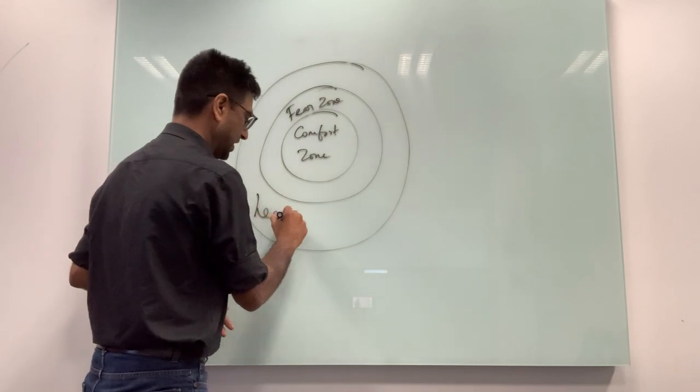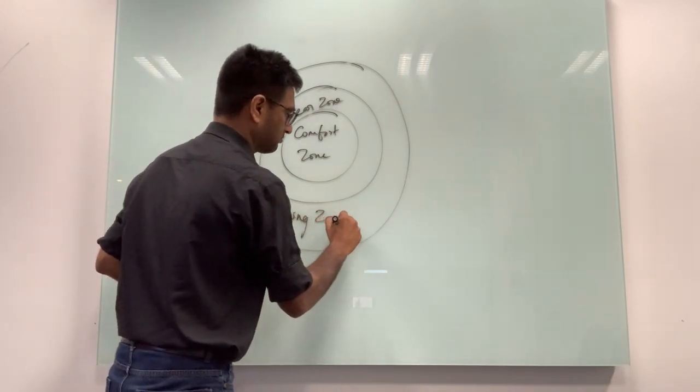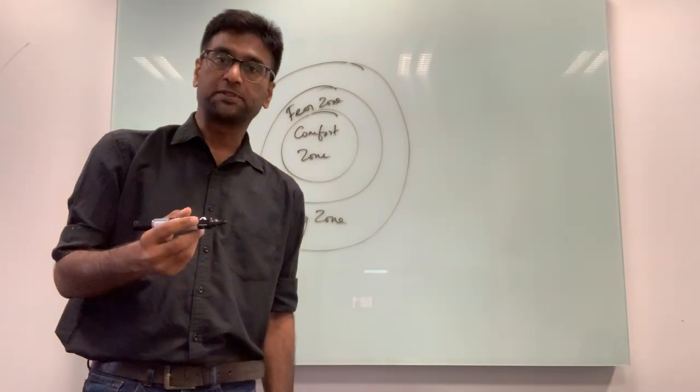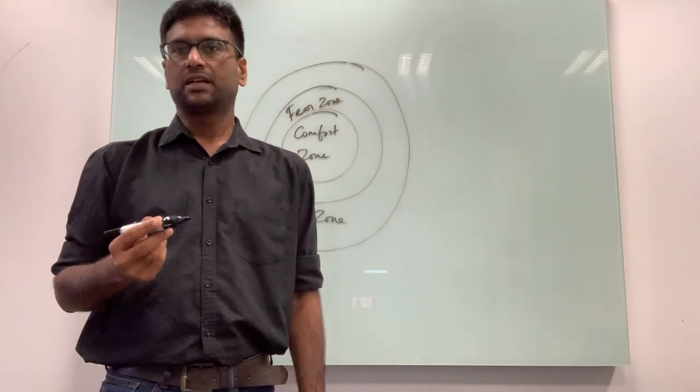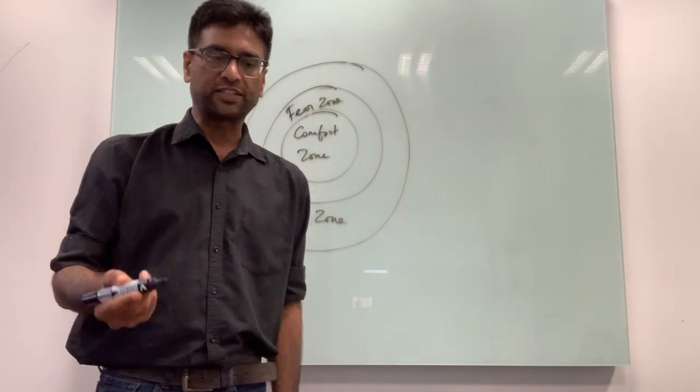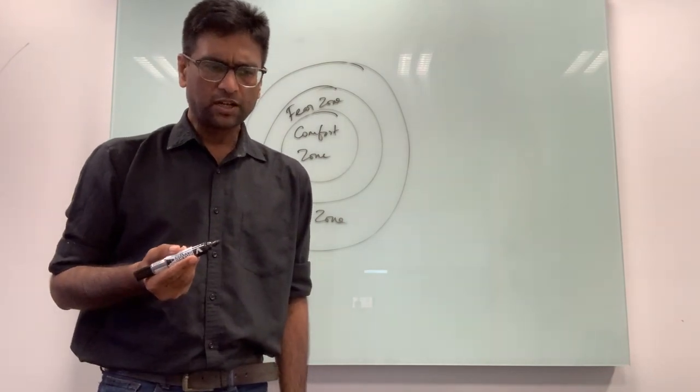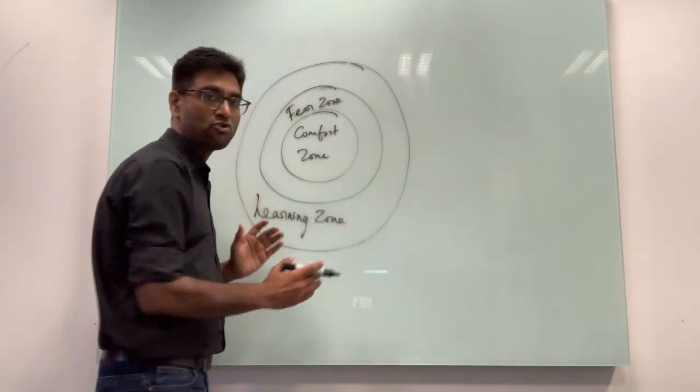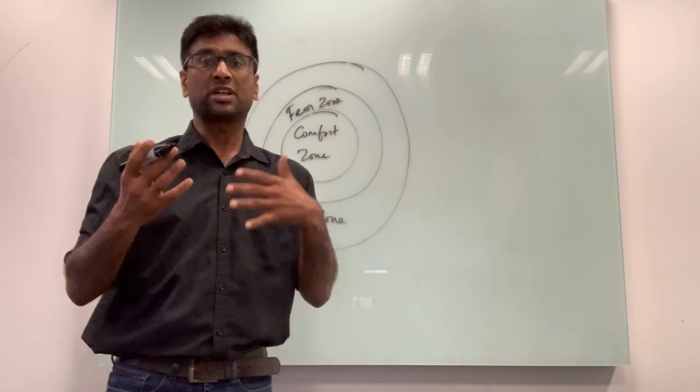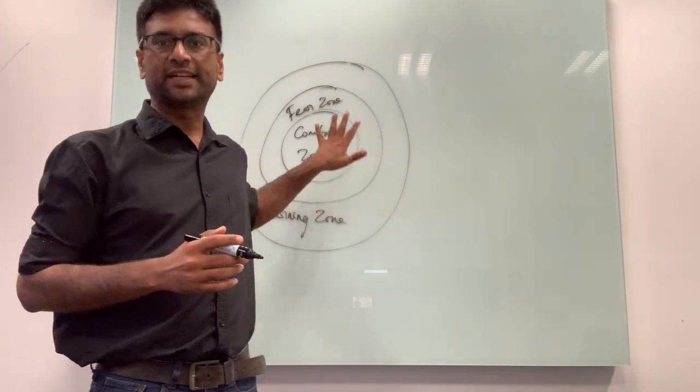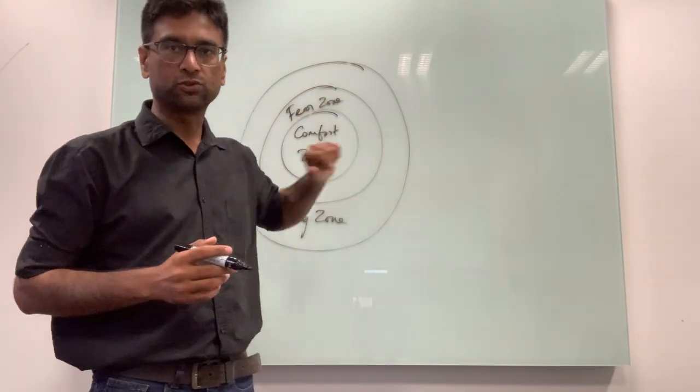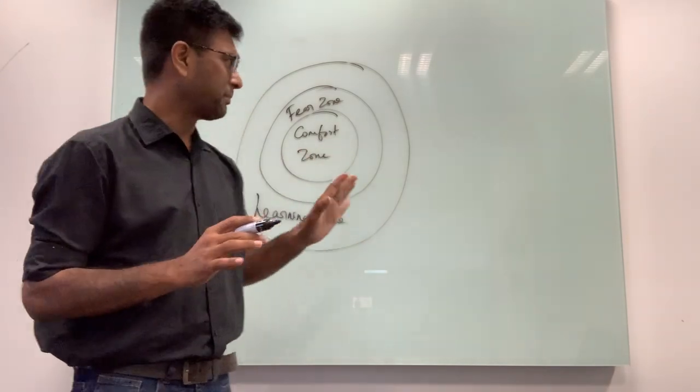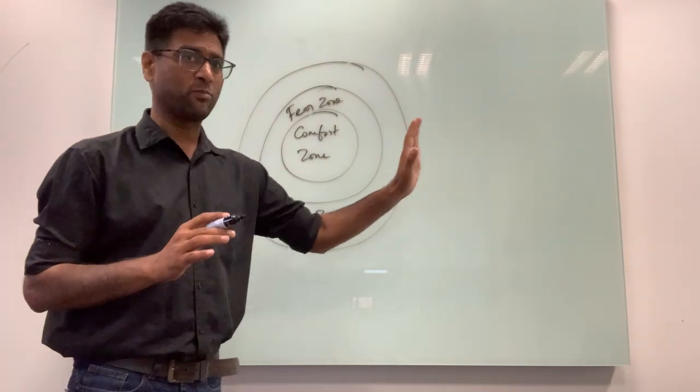This is where you actually start acquiring new skills. You start addressing some of the problems. You start seeing some early success in terms of whatever it is that you were trying to do. What happens is, slowly, this then becomes your comfort zone because now you are adept at doing whatever is required, whatever it is that you were learning to do. Most people stop here, but true growth happens if you go beyond one more step.